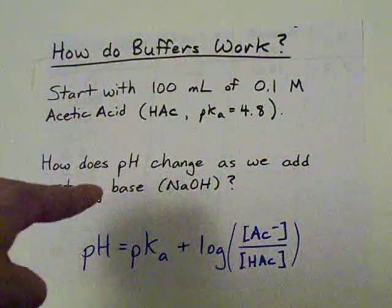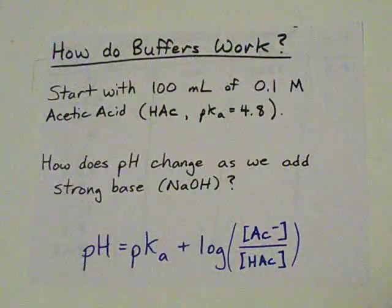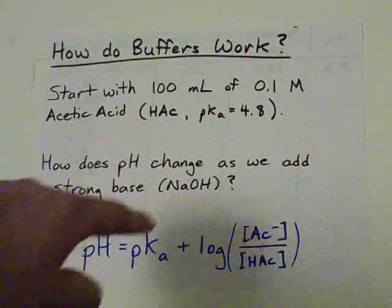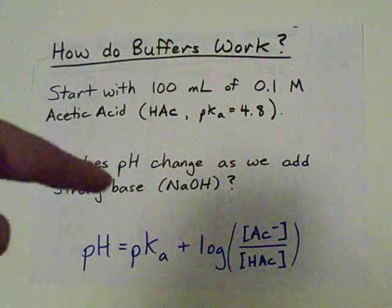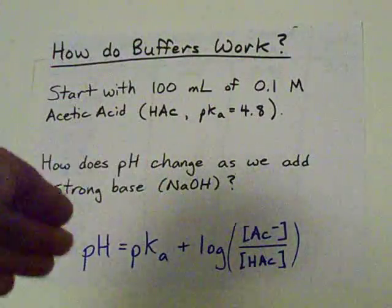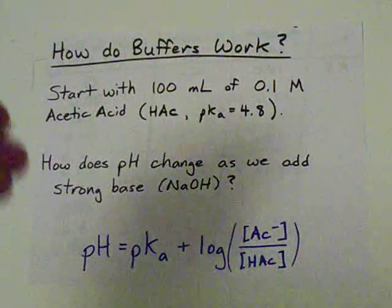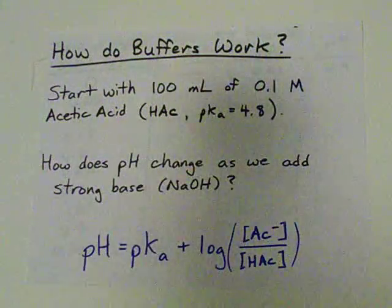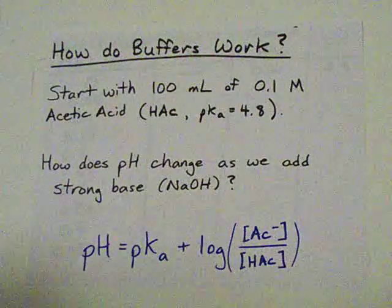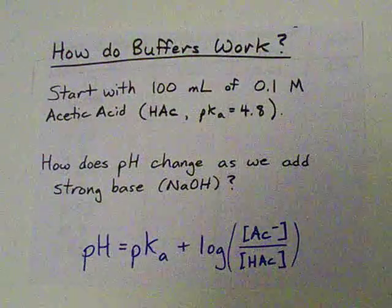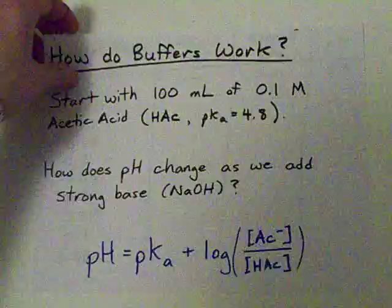How does the pH change as we add strong base NaOH? I'm going to assume we're adding this as a solid, because it's going to make my calculations easier. I don't want to have to account for volume changes if we're adding one thing to another. Alright, so check it out. I made you a little chart so you can understand what's going on here.